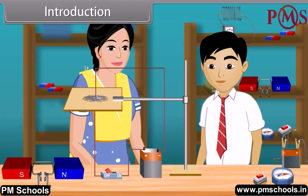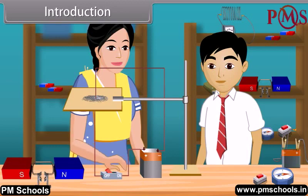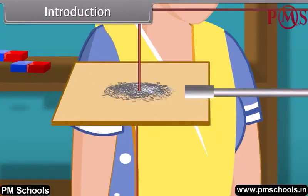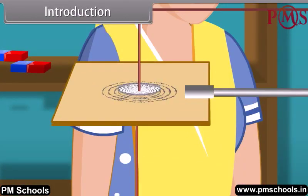After setting up the arrangement, she switches on the circuit. When she switches on, some movement is shown in the iron dust particles and they start arranging into a concentric circles pattern.